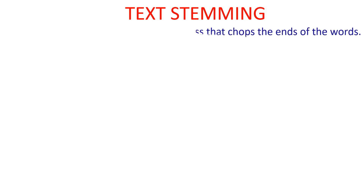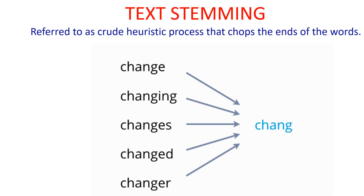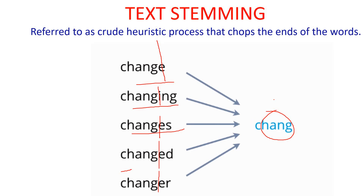The next thing is text stemming. What is text stemming? Basically, a word may have different prefixes and suffixes attached to it. Text stemming means chopping the ends of words — cutting from the last part of the word. For example: change, changing, changes, changed, and changer — all these words are chopped. The final word we get is C-H-A-N-G, which doesn't have meaning, but the machine uses it. The drawback is that the final word produced may or may not have meaning.